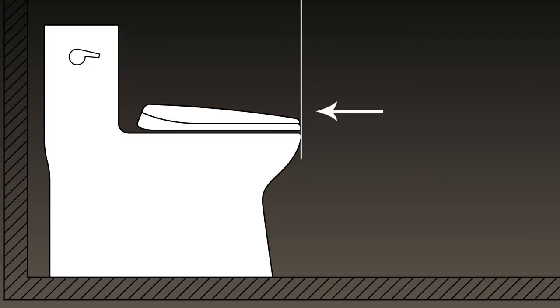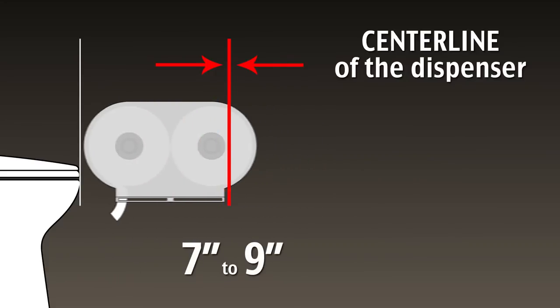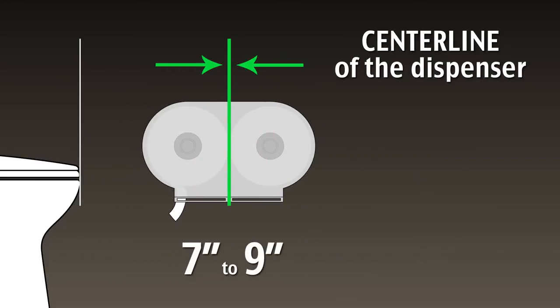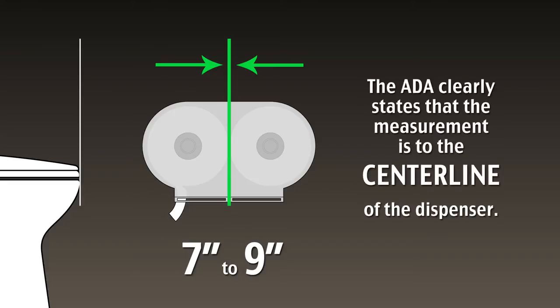To break it down step by step, the center line of the dispenser shall be located between 7 to 9 inches in front of the water closet. A common misconception is that the dispensed tissue needs to be located 7 to 9 inches in front of the toilet. This is incorrect. The ADA clearly states that the measurement is to the center line of the dispenser.